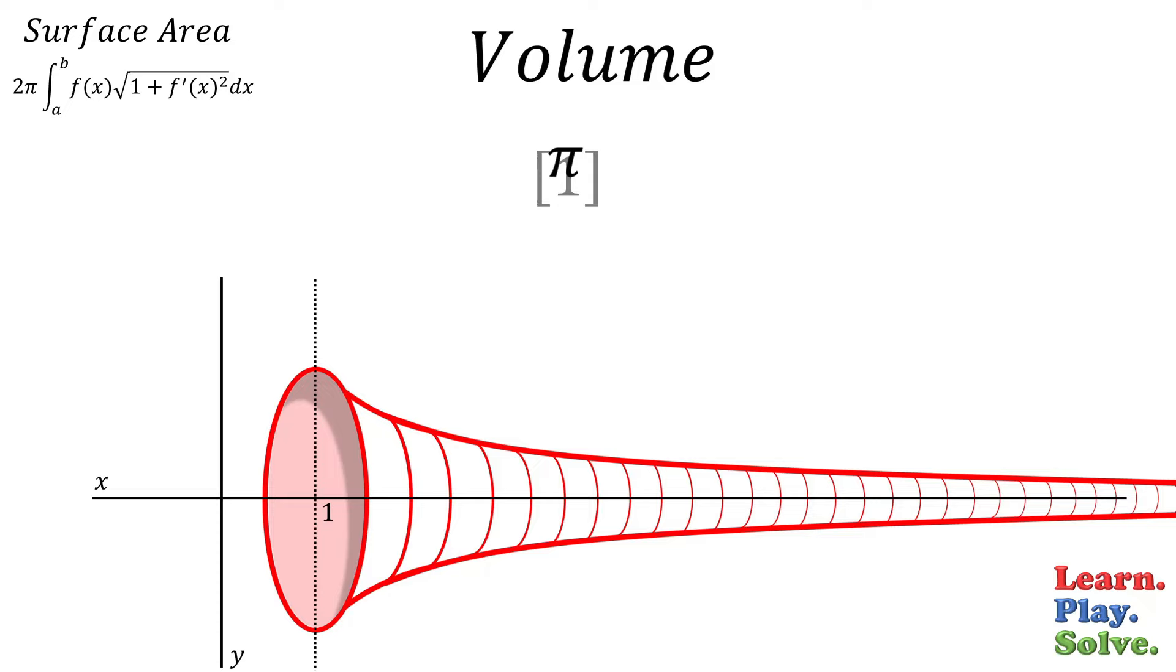The volume of Gabriel's horn is pi. I think this is already a very neat result. So now, let's find the surface area.